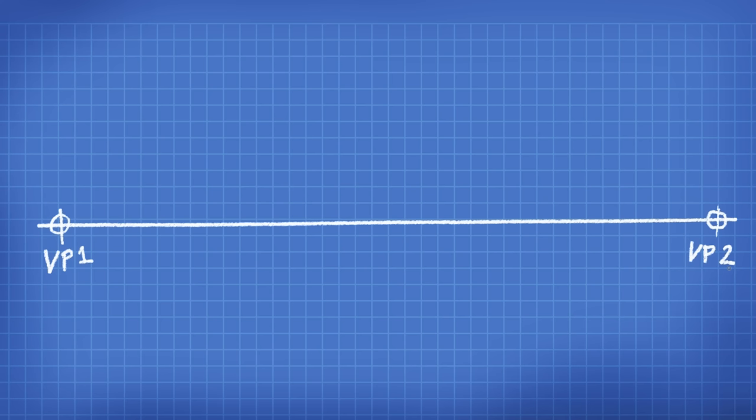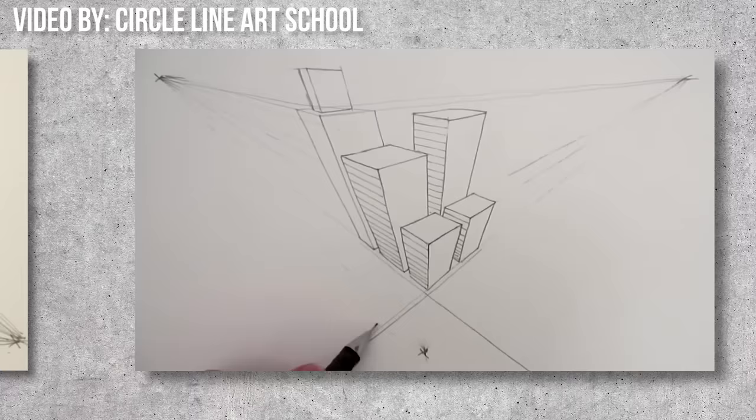And lastly, we have the three-point perspective. This is used to introduce a viewing angle to your sketches. This perspective technique has three vanishing points — your usual two opposing vanishing points on the horizon line, and then a third one placed either above or below. If you place the third point above the horizon line, it creates a worm's eye view like you're viewing the subject from below. But if you place the point below, it gives you a bird's eye view as if viewing from the skies.